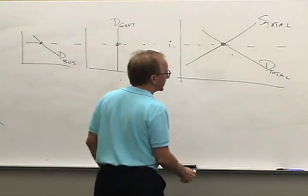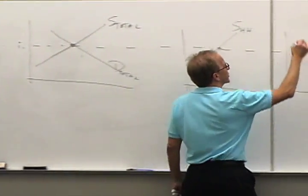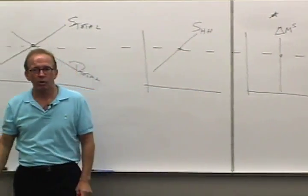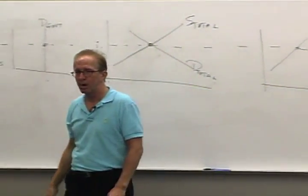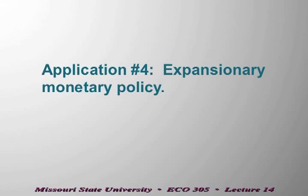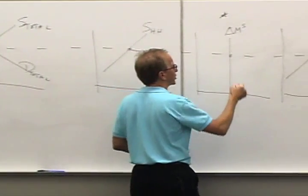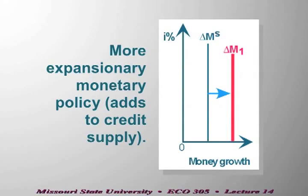What we want to talk about today is: what if we have a new monetary policy? What if monetary policy becomes more expansionary? Well, if monetary policy becomes more expansionary, then there's a new money supply — credit supply curve. I'll shift that over here to the right.